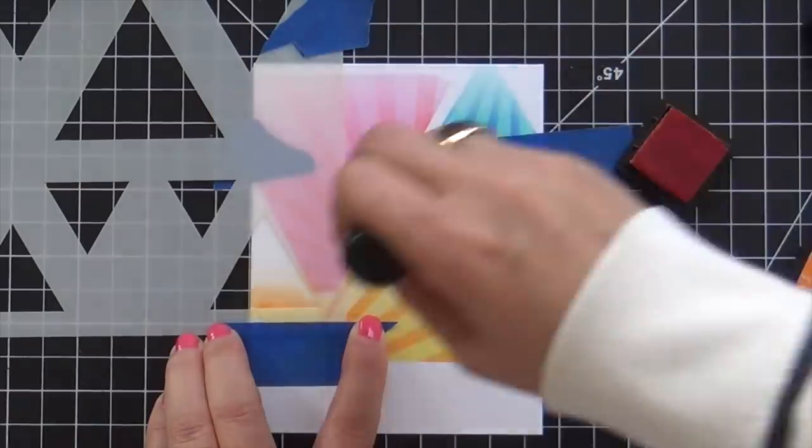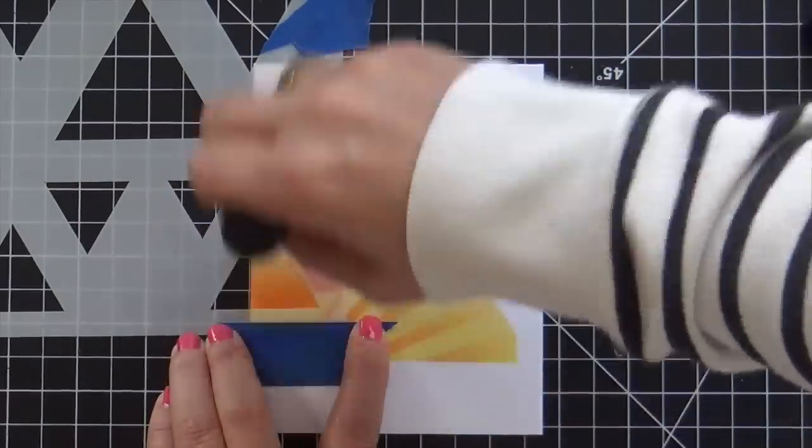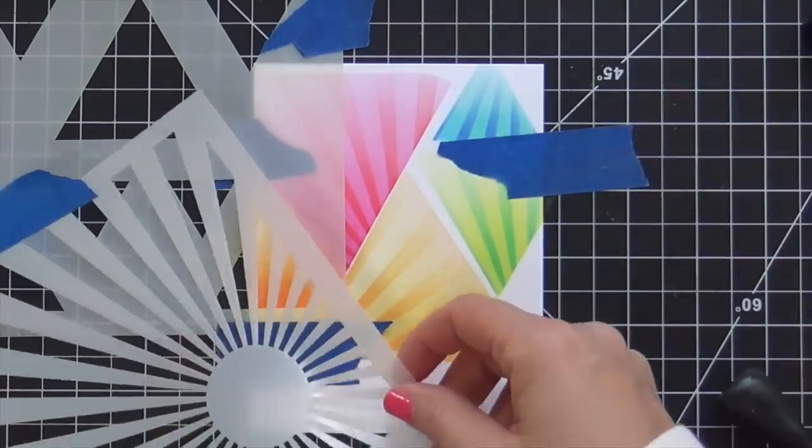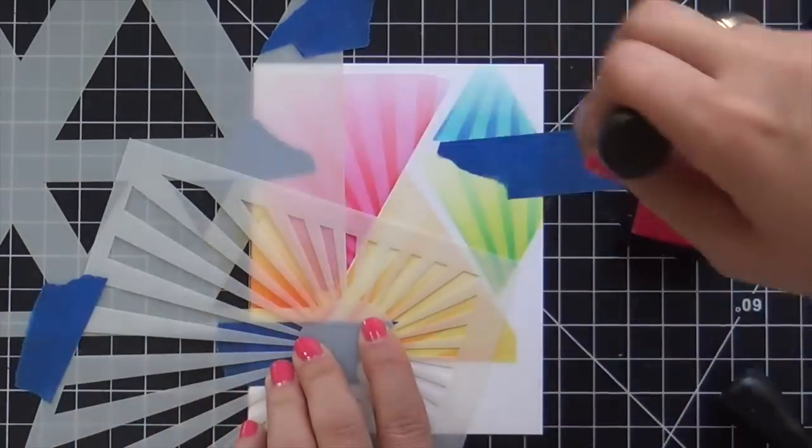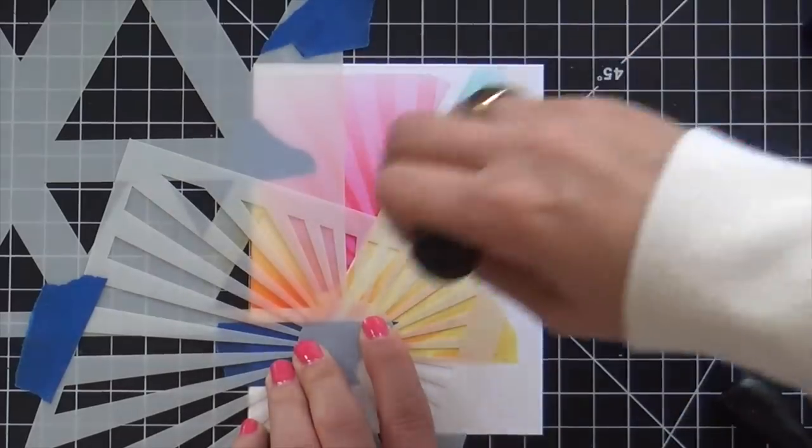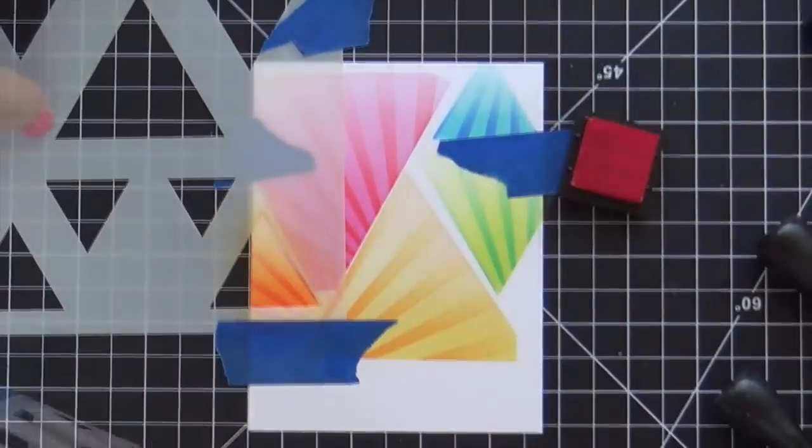From here on out it's just repetition - I'm doing the same thing over and over until I fill in all the triangles. What you got to do at this point is put on some tunes and just have yourself a ball. That's what I do. I like to use Spotify.